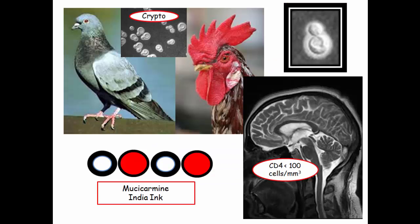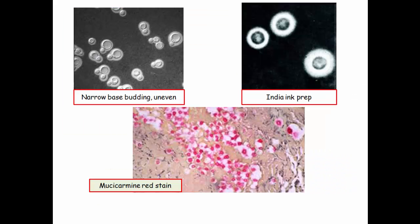To summarize: cryptococcus is spread by pigeons, has uneven narrow budding, CNS involvement especially if the CD4 count is very low, and the two key stains to be familiar with are mucocarmine and India ink. Here are just a few more images of the same principles — narrow-based uneven budding, India ink showing that big capsule, and mucocarmine red stain.